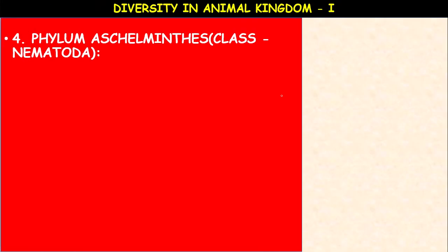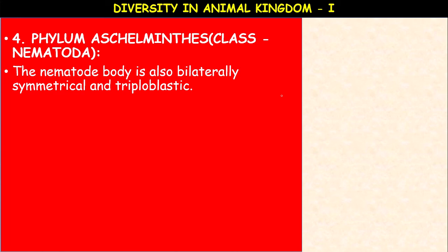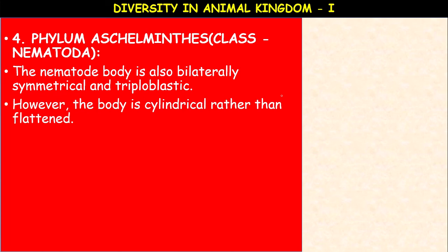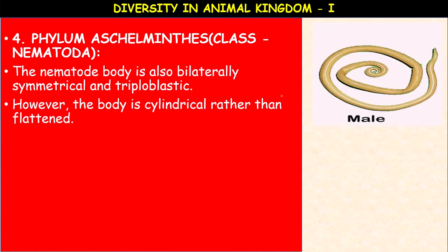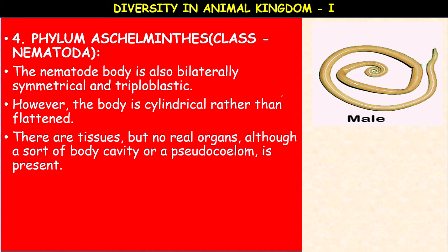Next phylum: Aschelminthes or Nematoda — also called roundworms. The nematode body is bilaterally symmetrical and triploblastic in nature. However, the body is cylindrical rather than flattened — that is why they are called roundworms. There are tissues but no real organs. A sort of body cavity or pseudocoelom is present — they are pseudocoelomates. The mesoderm does not line the body cavity and is present between the ectoderm and endoderm as scattered pouches.